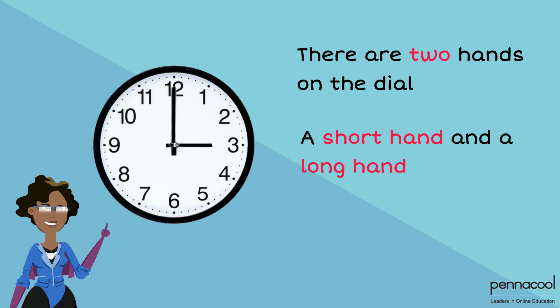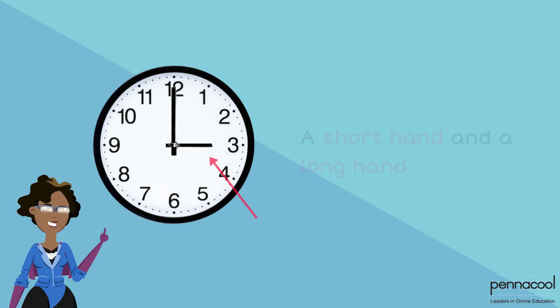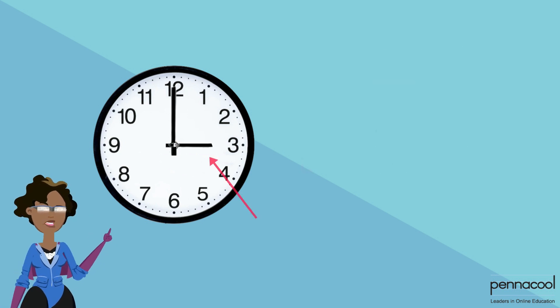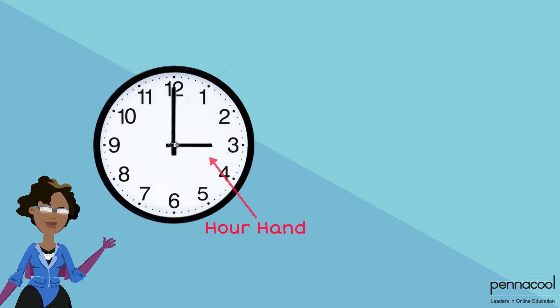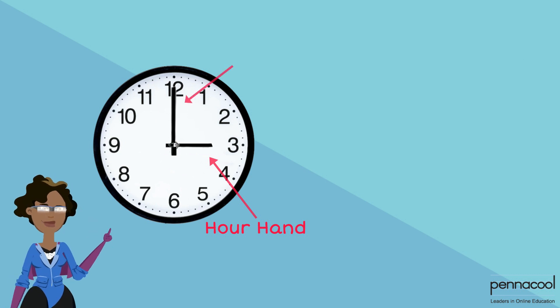The number that the short hand points to represents the hour. The short hand is known as the hour hand. The number that the long hand points to represents the minutes. The long hand is known as the minute hand.